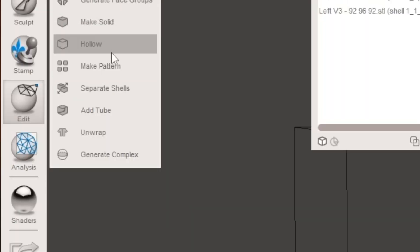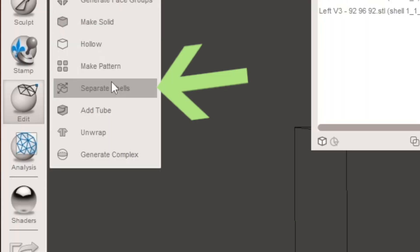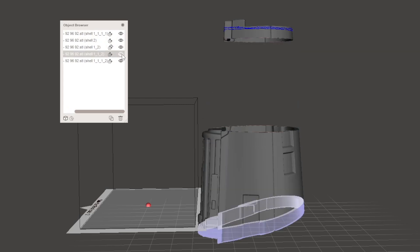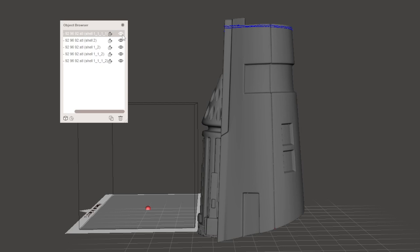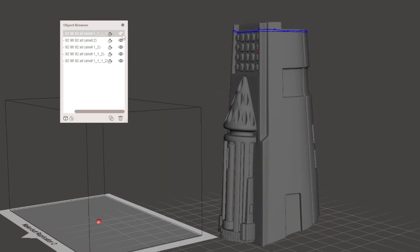Once you have everything sliced what you're going to want to do now is go back under the edit tab and then select separate shells. Whenever you click separate shells it's going to give you all of the individual little slices that you've done. If you click the little eyeball next to each little portion you can see it come and go and then you can export each individual piece as its own little thing to print out to see if they fit.